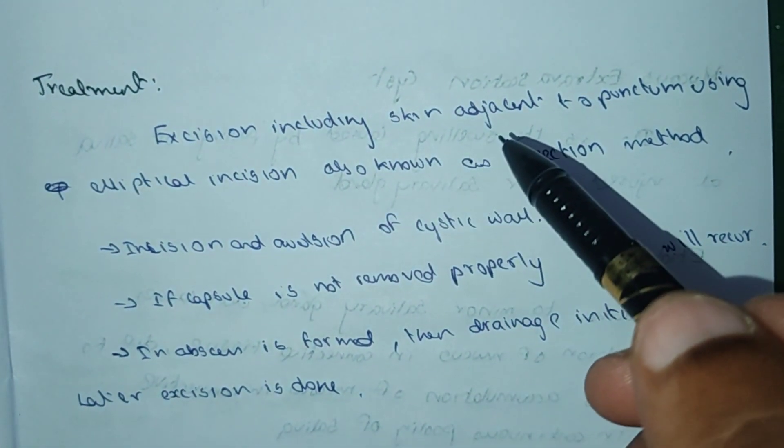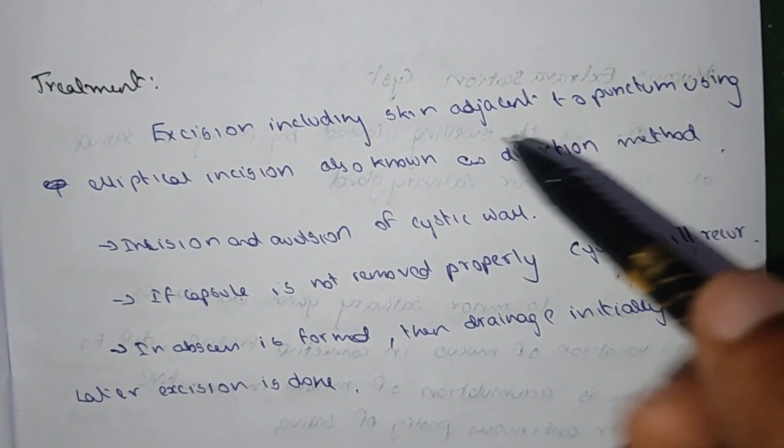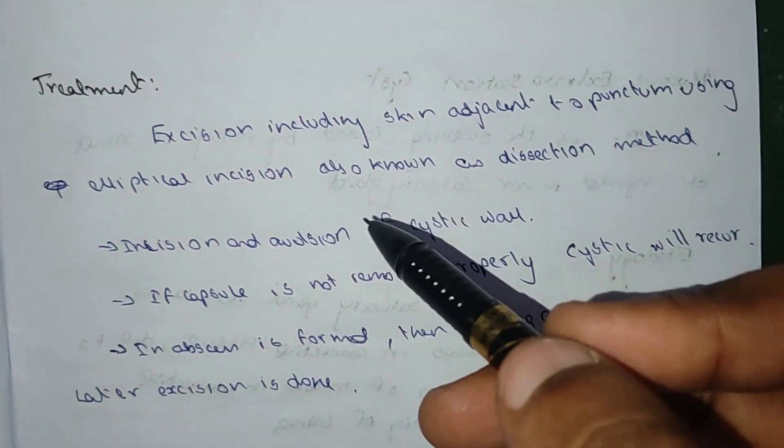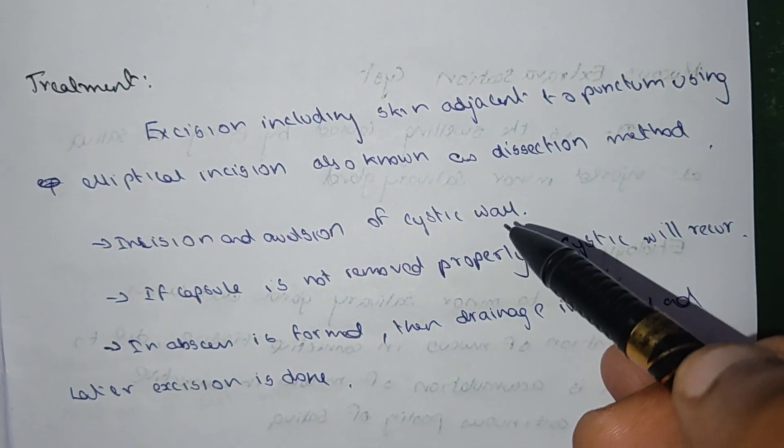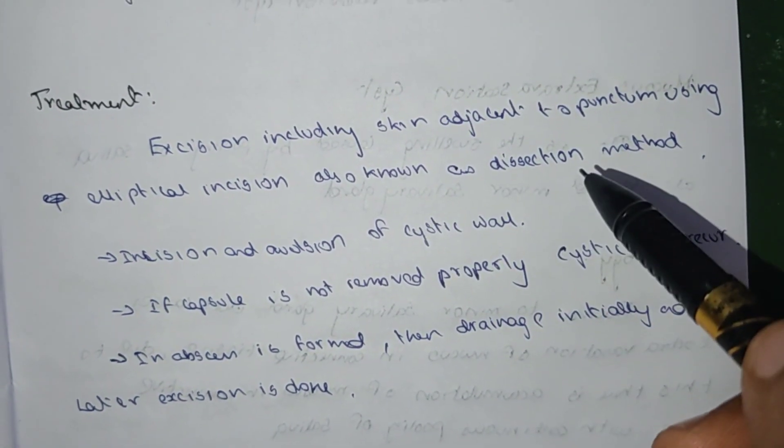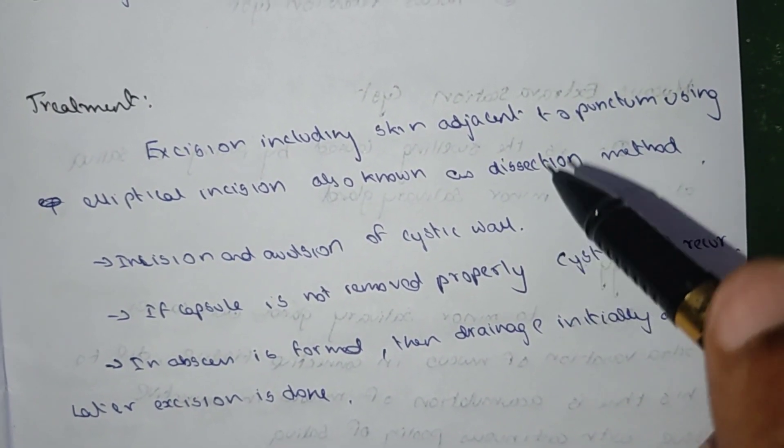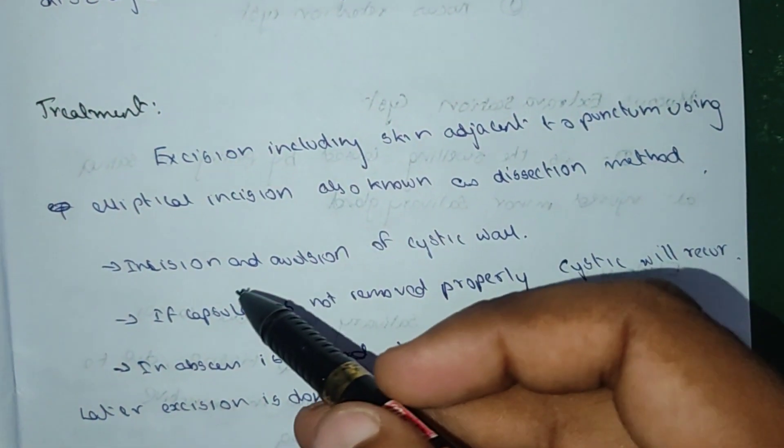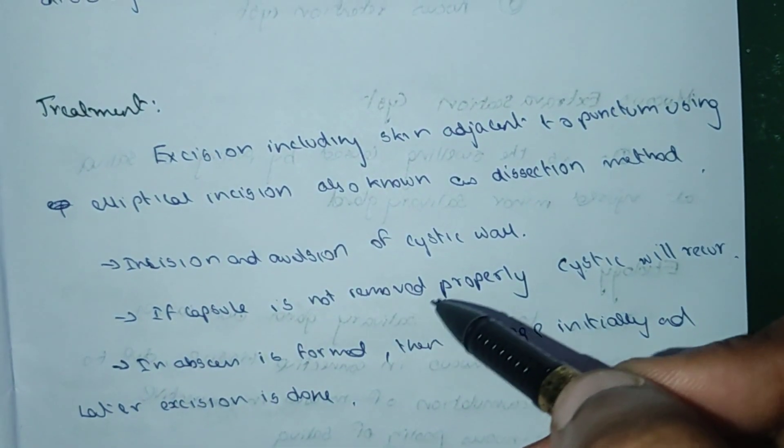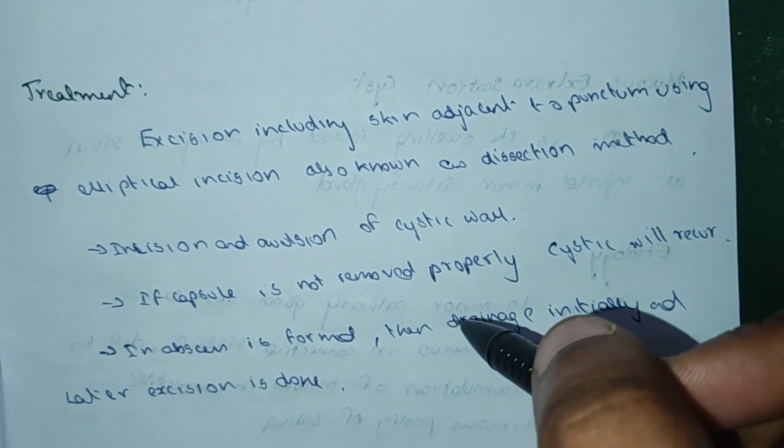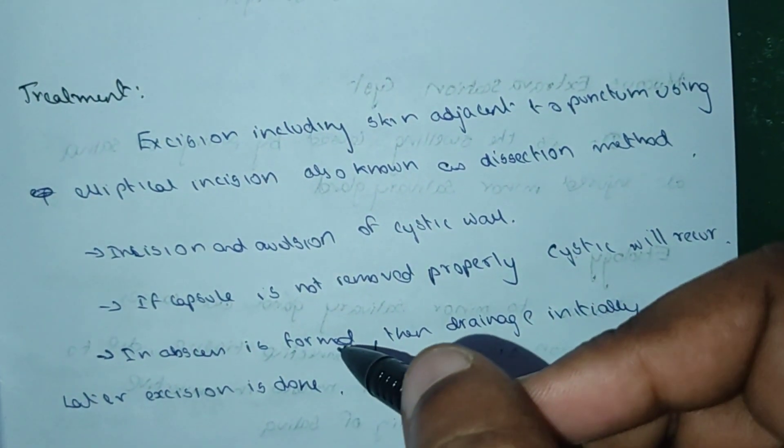Treatment: Excision including skin adjacent to the punctum using elliptical incision, also known as dissection method. The incision and avulsion of the cystic walls should be done.